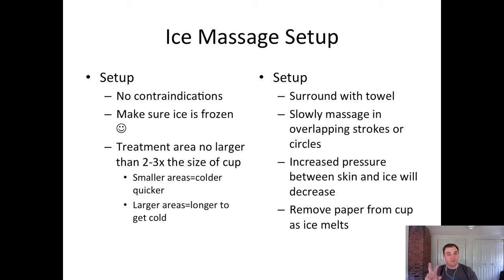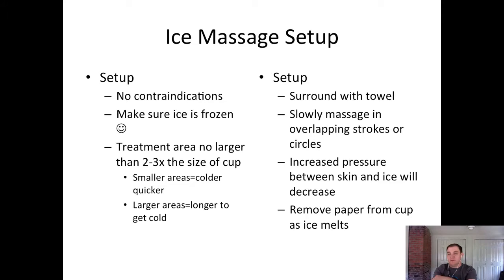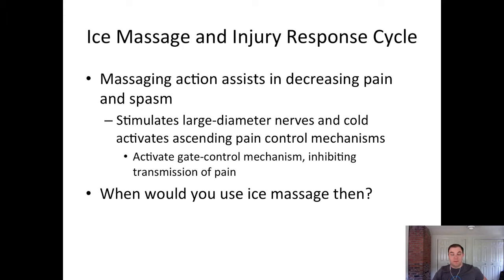Make sure the treatment area is no larger than two to three times the size of the cup — smaller areas get colder more quickly, and this size limit allows for an effective massage. Surround the treatment area with a towel so melt water can drain onto it. Slowly massage with overlapping strokes or circles; you can go straight up and down or in circles. Don't be afraid to apply moderate pressure over a particularly tender or painful spot. Remove paper from the cup as it melts.